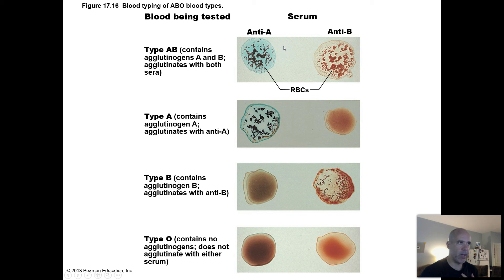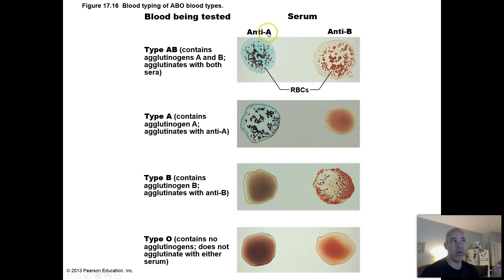Let's say you have type AB blood. On the glass slide you mix some of the blood with anti-A antibodies, and then over here you mix the blood with some anti-B antibodies. Well, if this one clumps and this one clumps, that tells you the antibodies attached to the red blood cells in both cases — meaning this blood had both A antigens and B antigens on the surfaces of the red blood cells. So if you have both, then you have type AB blood.